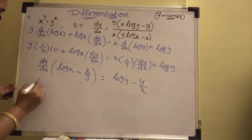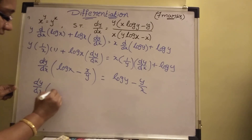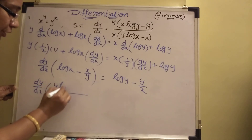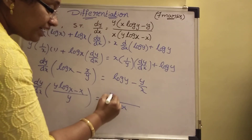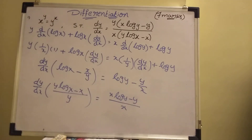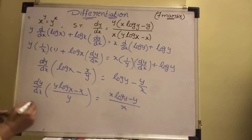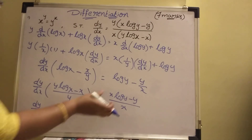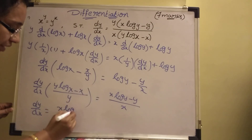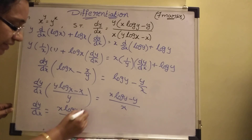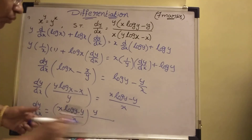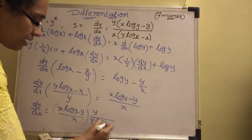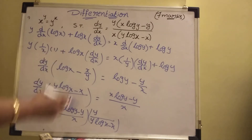Now take LCM. dy by dx, take LCM y on the left: y into log x minus x, divided by y. Equal to, take LCM x on the right: x log y minus y, divided by x. We want dy by dx, so write dy by dx equal to (x log y minus y) by x, divided by (y log x minus x) by y.